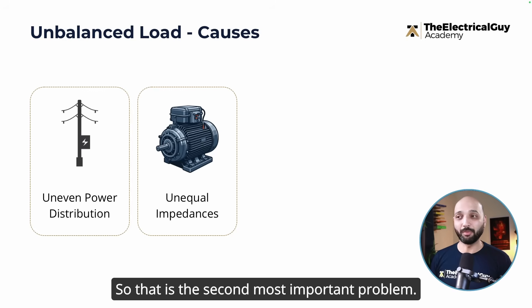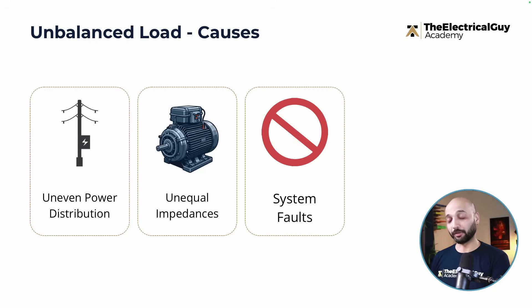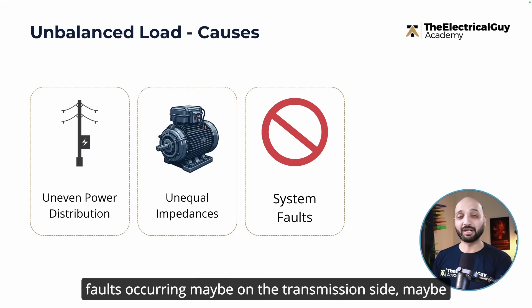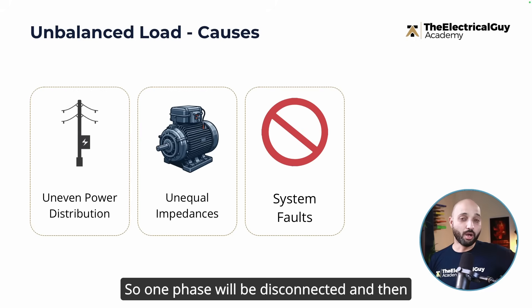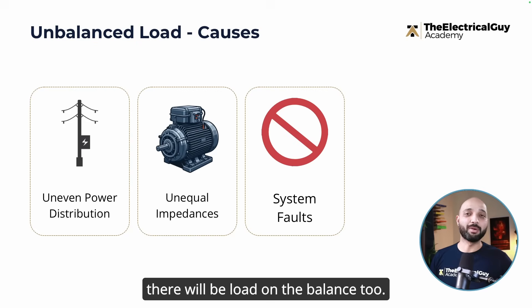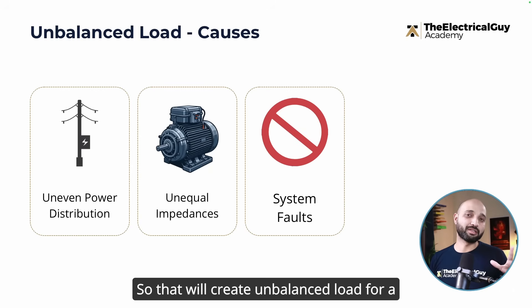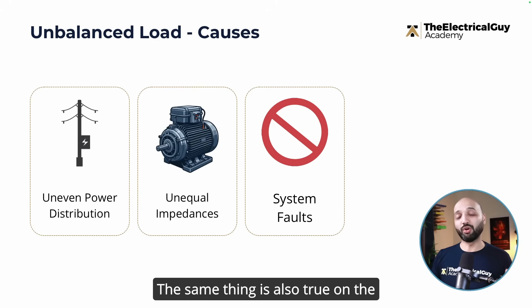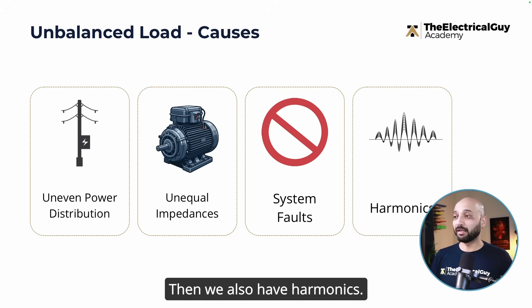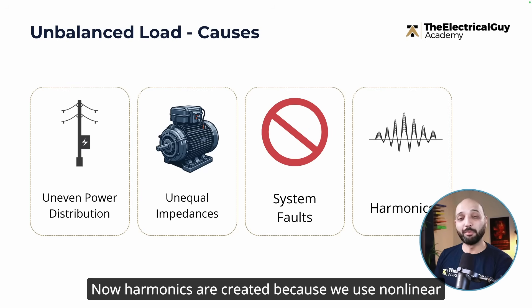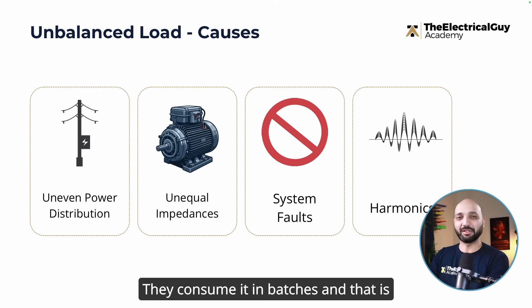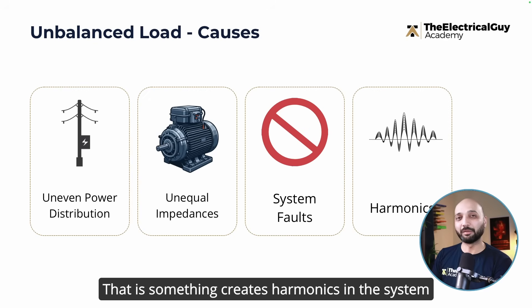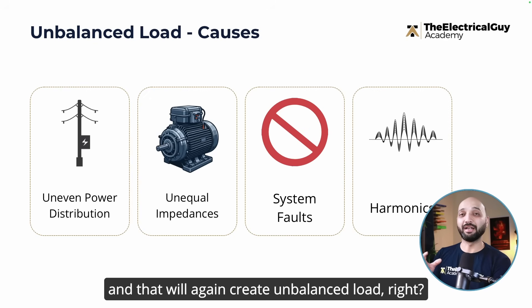The third cause is system faults. Faults can occur on the transmission or distribution side — for example, a single line-to-ground fault disconnects one phase and creates an unbalanced load for a brief period. The fourth cause is harmonics. Harmonics are created by non-linear loads such as computers and variable frequency drives, which don't consume current at a constant rate but in batches. This creates harmonics in the system and again produces unbalanced load.